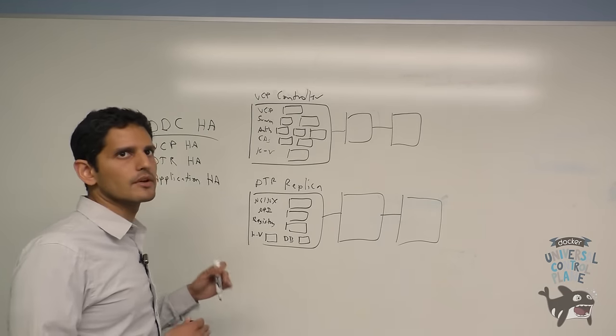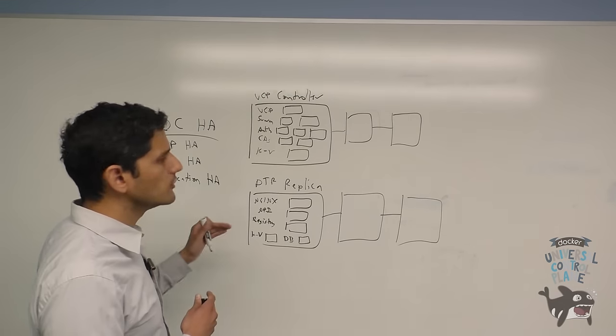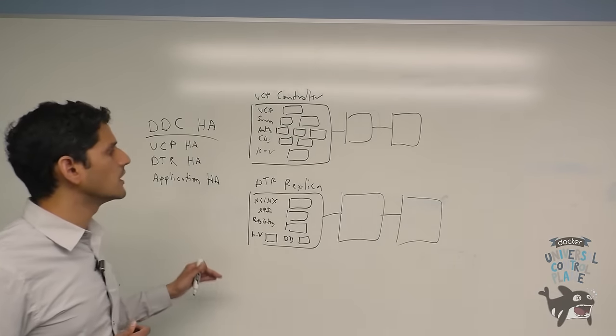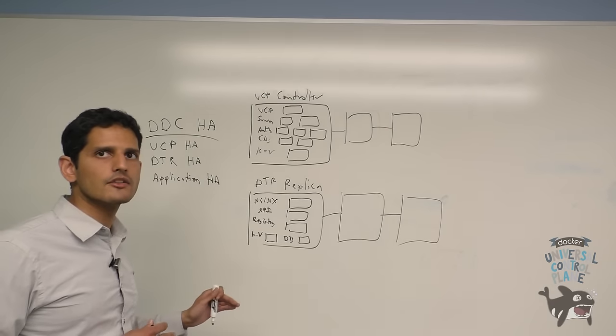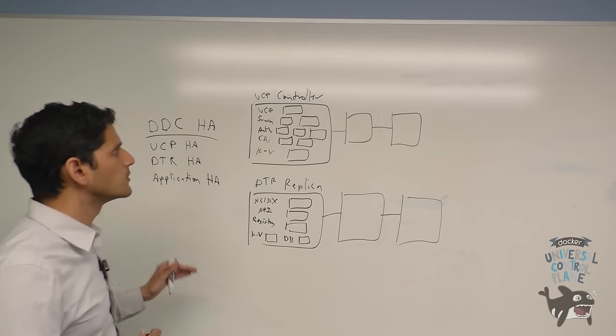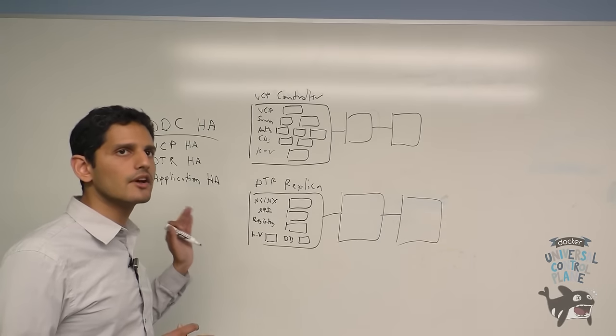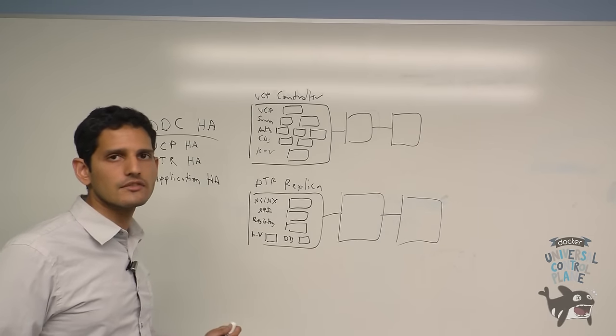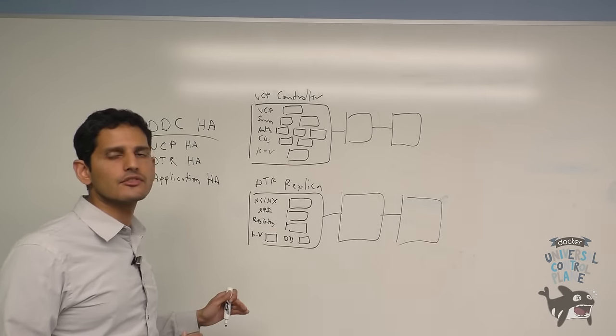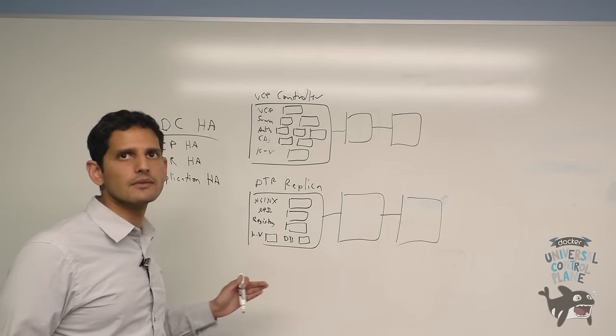Second, depending on the number of nodes you want to run and what you want to run, will allow you to decide whether you want to run UCP and DTR on the same nodes. So if you're running DTR for the purposes of image repository management, as well as UCP for scheduling applications, it's highly recommended that you run UCP and DTR on separate nodes to ensure that a failure in DTR doesn't affect UCP and vice versa. However, if you're just running UCP for the purposes of setting up DTR, then it's okay to run DTR and UCP on the same nodes.